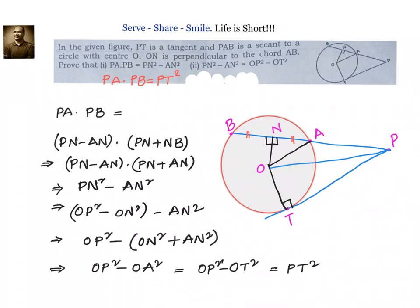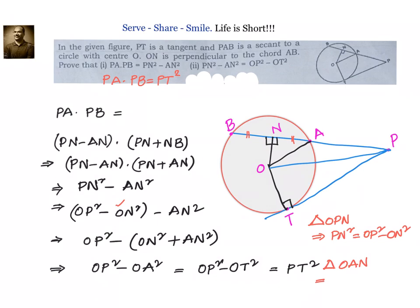In triangle OAN, ON square plus AN square equals OA square. But OA equals OT, both are radii, so OP square minus OA square equals OP square minus OT square, which equals PT square. Therefore PA into PB equals PT square. The two triangles used were triangle OPN for Pythagoras (PN square equals OP square minus ON square) and triangle OAN (OA square equals ON square plus AN square).